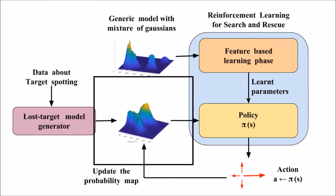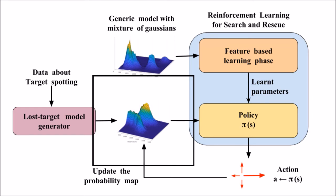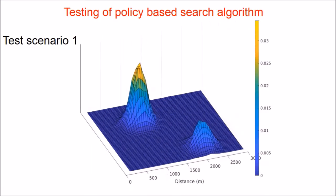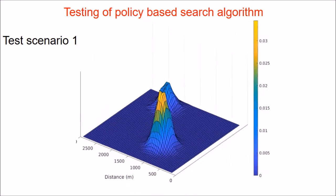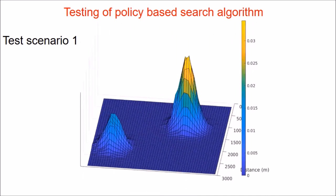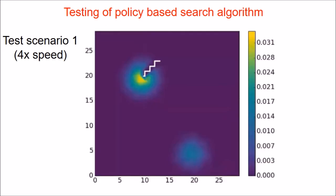We use two significantly different test scenarios to evaluate and compare the search algorithms. The first test scenario comprises two Gaussians imitating the probability distribution of a lost target. The path chosen by our search algorithm adapts according to the probability mass coverage over time.